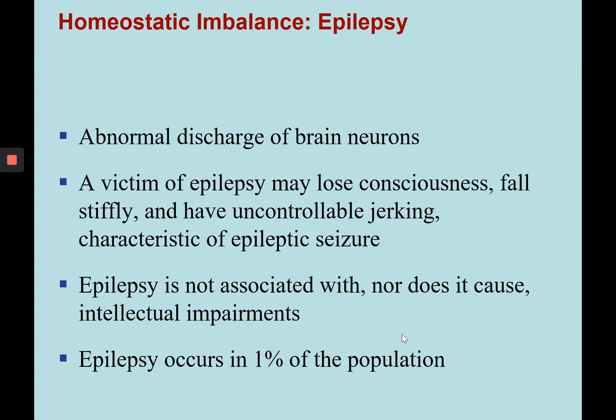One homeostatic imbalance to discuss in depth is epilepsy. Epilepsy occurs when there is abnormal discharge of brain neurons — abnormal discharge occurring at the synapse. A victim of epilepsy may lose consciousness, fall stiffly, and have uncontrollable jerking due to skeletal muscle contraction, characteristic of an epileptic seizure. Epileptic seizures can be long or short, and epilepsy is not associated with intellectual impairments. It only occurs in about 1% of the population.